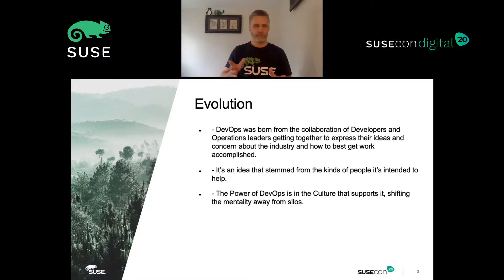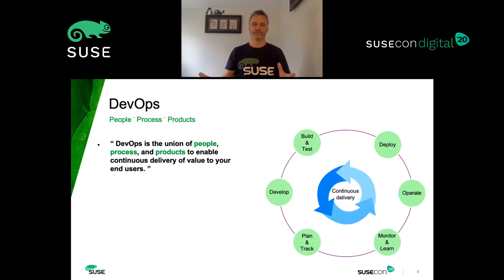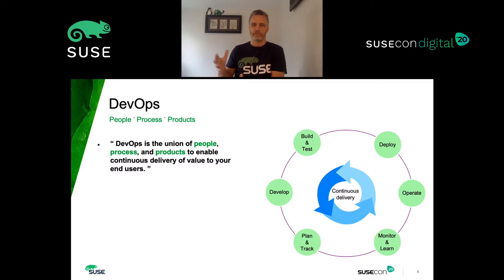This was not a big bang event. This was an evolution going on for many, many years that then led up to this more DevOps type of culture we have today — or that many companies are looking at adopting today. The power of DevOps is in the culture that supports it, shifting the mentality away from the traditional silos.